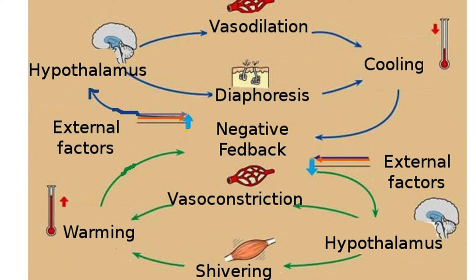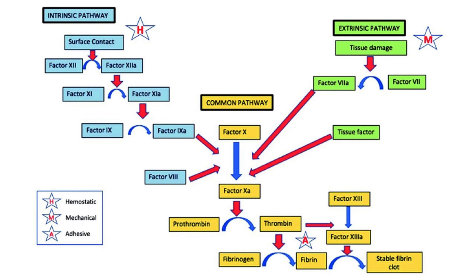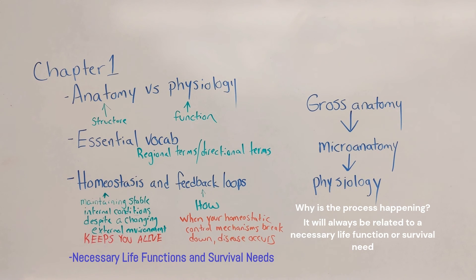For example: the point of this process is to elevate my temperature — body temperature staying within a set range is a survival need. The point of this process is to allow my bones to grow — growth is a necessary life function. The point of this process is to create a fibrin mesh that stops me from bleeding, because without it I can no longer transport oxygen and nutrients — which are a survival need. Write this down, because you're 100% going to forget it by the time you get to the systems.